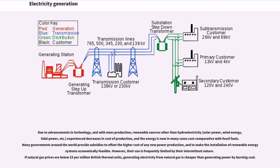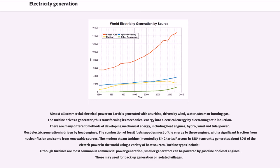Due to advancements in technology and mass production, renewable sources other than hydroelectricity — solar power, wind energy, tidal power, etc. — experience decreases in cost of production, and the energy is now in many cases cost-comparative with fossil fuels. Many governments around the world provide subsidies to offset the higher cost of any new power production and to make the installation of renewable energy systems economically feasible. However, their use is frequently limited by their intermittent nature. If natural gas prices are below $3 per million British thermal units, generating electricity from natural gas is cheaper than generating power by burning coal. Almost all commercial electrical power on Earth is generated with a turbine, driven by wind, water, steam or burning gas. The turbine drives the generator, thus transforming its mechanical energy into electrical energy by electromagnetic induction.